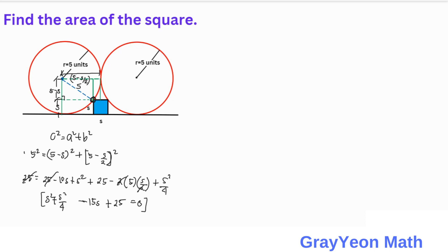So multiplying by 4, we have 4S squared plus S squared minus 60S plus 100.